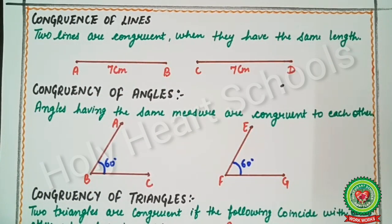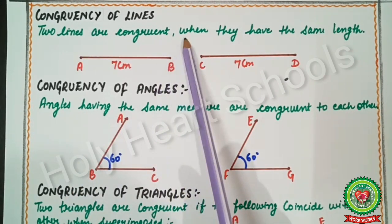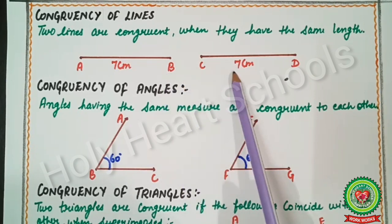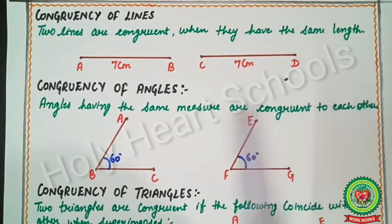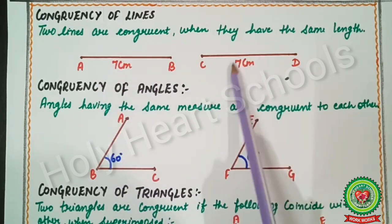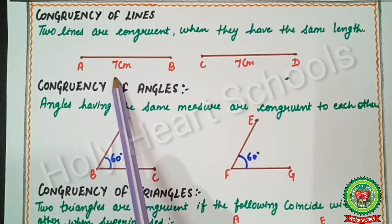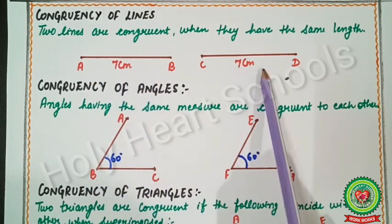Now we will study how two lines, two angles, or two triangles can be congruent. First, congruency of two lines: two lines are congruent when they have the same length. For example, line segments AB and CD both have a length of seven centimeters, so these lines are said to be congruent.